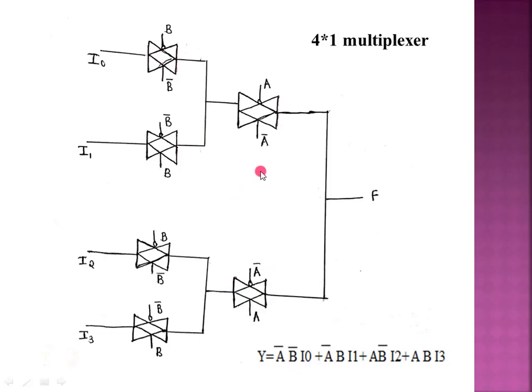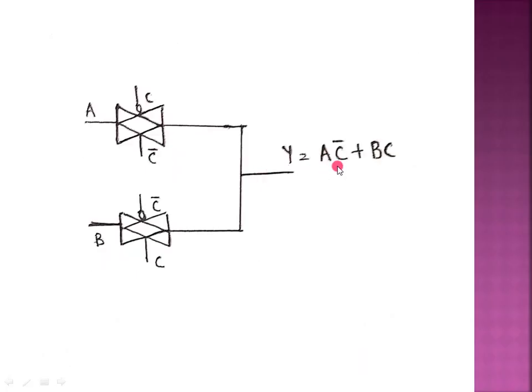Using transmission gate logic will reduce the number of logic gates. For example, A·C-bar plus B·C can be implemented with transmission gates: C-bar selects A, and C selects B in parallel. This is the transmission gate logic. You can use it to implement any logic expression. If you like this video, please like and subscribe. Thank you for watching.